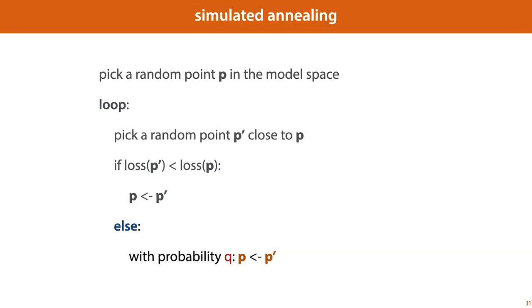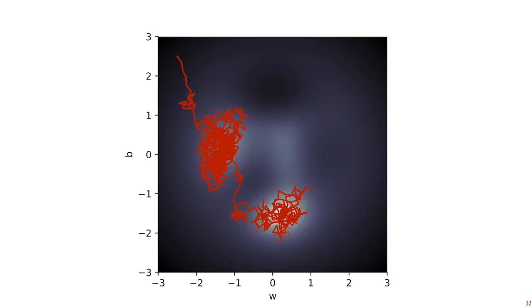The simulated annealing algorithm is very similar to the random search with two lines added here. Where in random search, we only move to the next model if it has a lower loss than the current model. In simulated annealing, we can also move to the next model if it has a worse loss with a small probability Q. And this means that with a small probability, the algorithm can essentially move uphill. And that allows it to escape local minima with a small probability, which is what we see here.